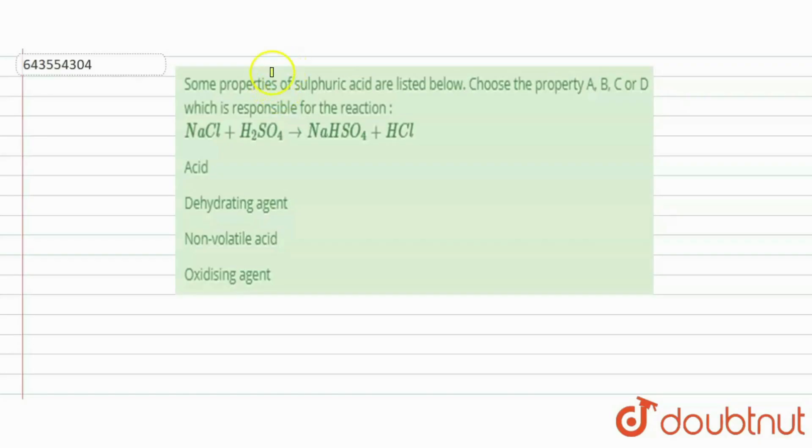Hi everyone, let's take a question here. In the question, some properties of sulfuric acid are listed below. That is acid, dehydrating agent, non-volatile acid, or oxidizing agent.